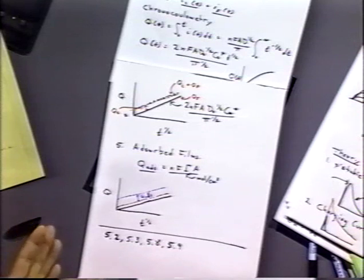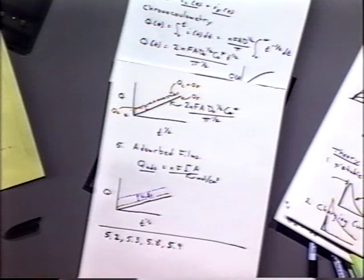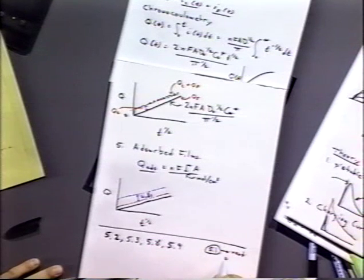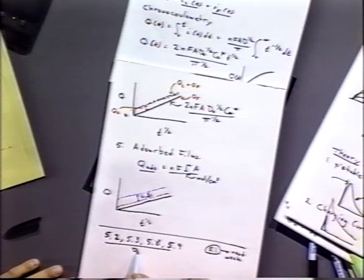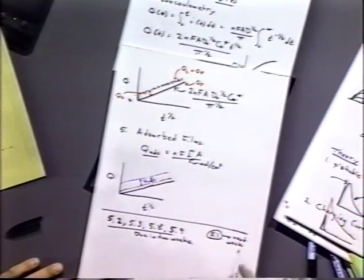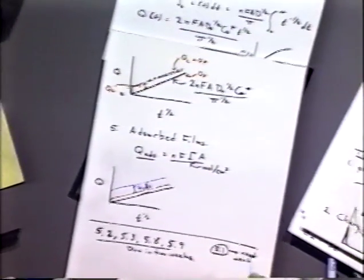Now last time I think we had, was it 5.1 due, which one was the control equation? So I said 5.1 is not due this week, but we'll have 5.1 due next week.